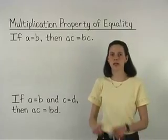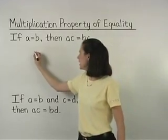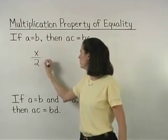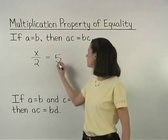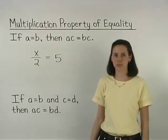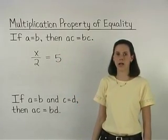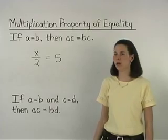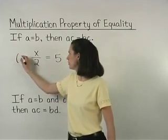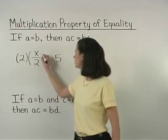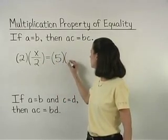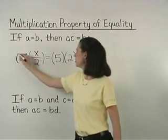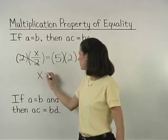For example, if we have the equation x over 2 equals 5, then the multiplication property of equality allows us to multiply both sides of the equation by 2 to get x equals 10.